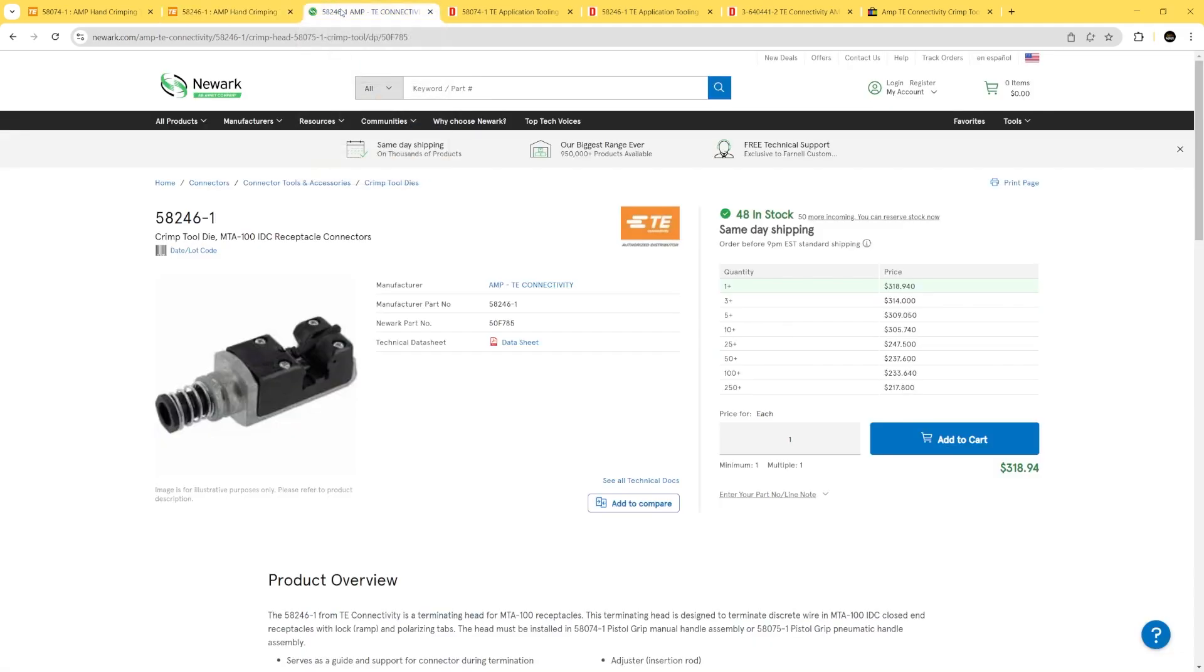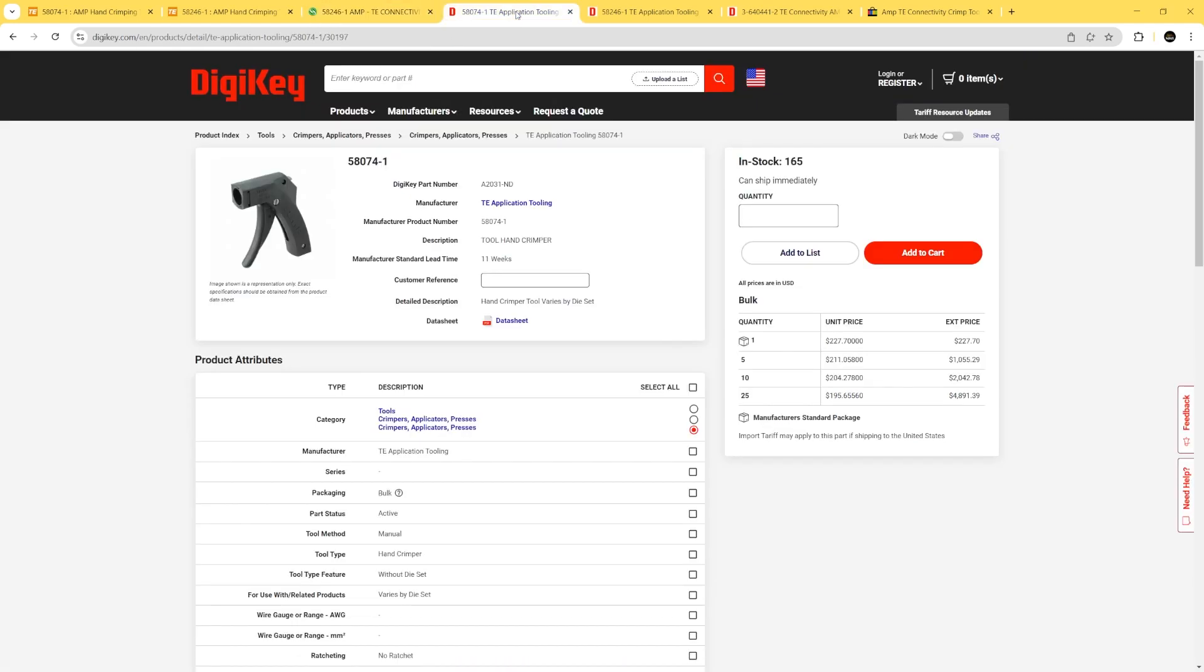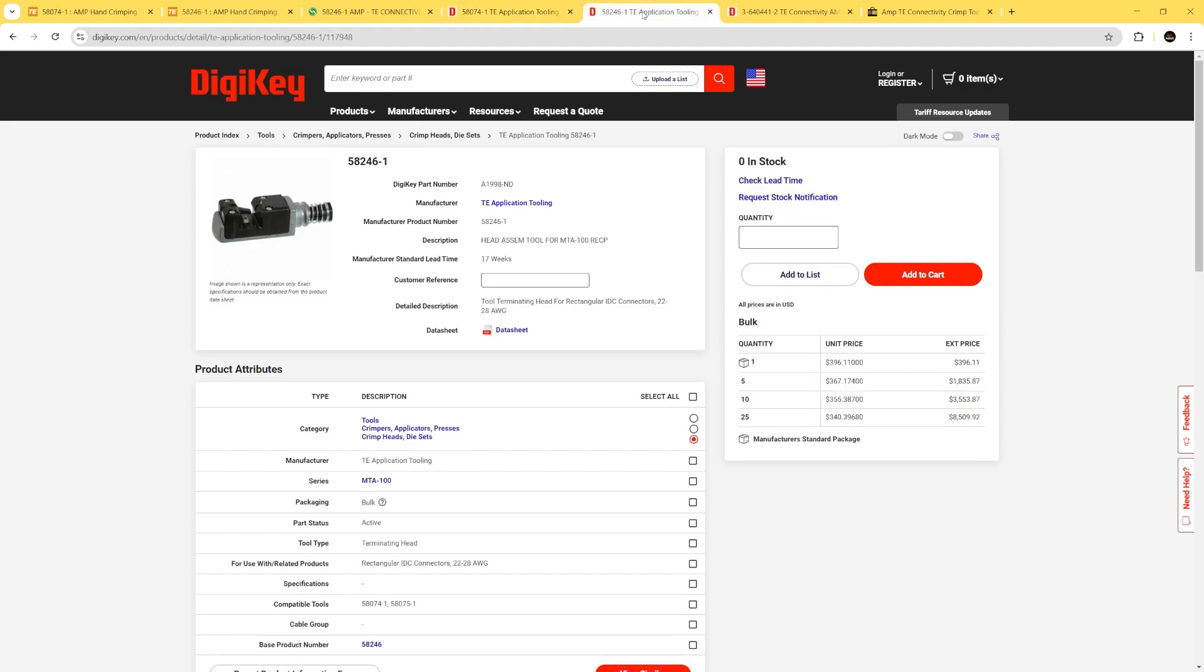So if you do a little research and look around, you can find it elsewhere. I found it for $319 on Newark's site. Another good resource is Digikey. Obviously, Digikey is a little more expensive. You can see $227 for just the handle. And then the head is almost $400. So that's about 600 bucks through Digikey.